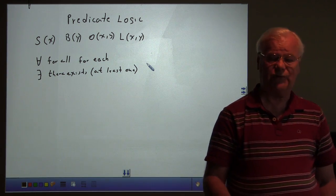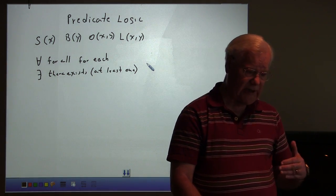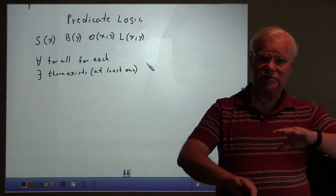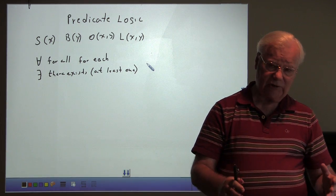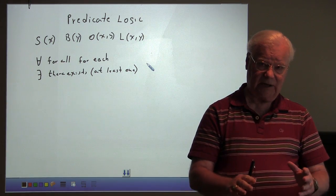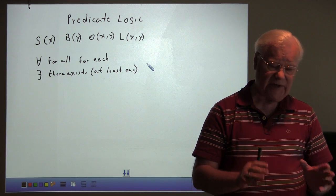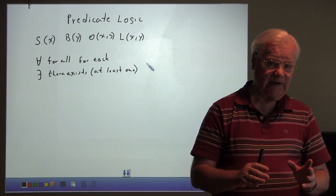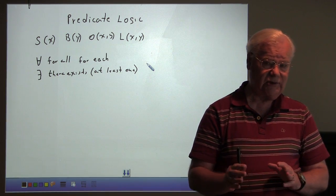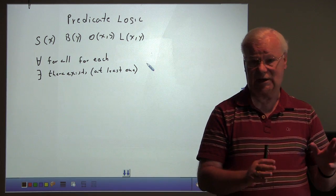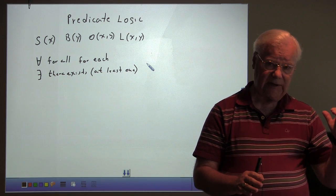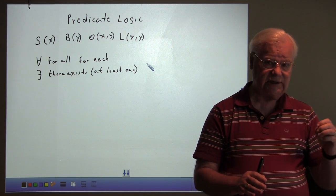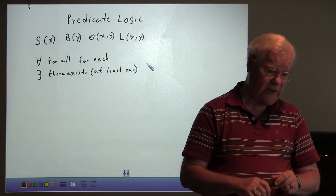So, notice the difference. The upside-down A, for all, or for each, refers to the whole set, or all, classes. If we said, for all students, we'd mean all students, not just one or two. But if we say there exists, well, we may not mean all the students. We may mean one student, or ten students, but not all of them, okay? So, the upside-down A refers to for all. The backwards E says there exists.